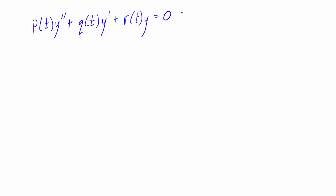In order to use the reduction of order method, you have to be given one solution to the differential equation, and that's just going to look something like y1 of t equal to some expression. It's mandatory for this type of problem. If you're not given y1 of t, then you're probably not looking at a reduction of order problem. A typical question will give you that one solution and ask you to find another solution or the general solution. If you find two different solutions, you can use the principle of superposition to add them together with unknown constants and generate the general solution.